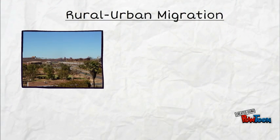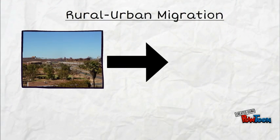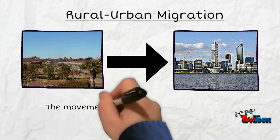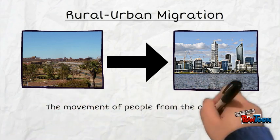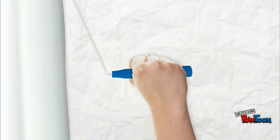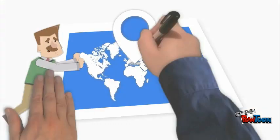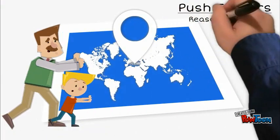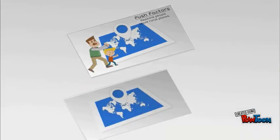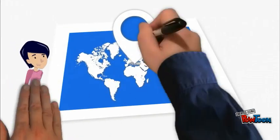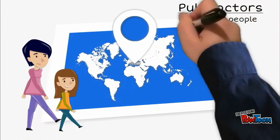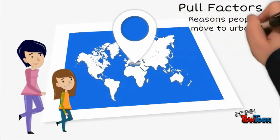Rural Urban Migration is the movement of people from rural places to urban places. Push factors are the reasons people leave rural places and pull factors are the reasons people move to urban places.